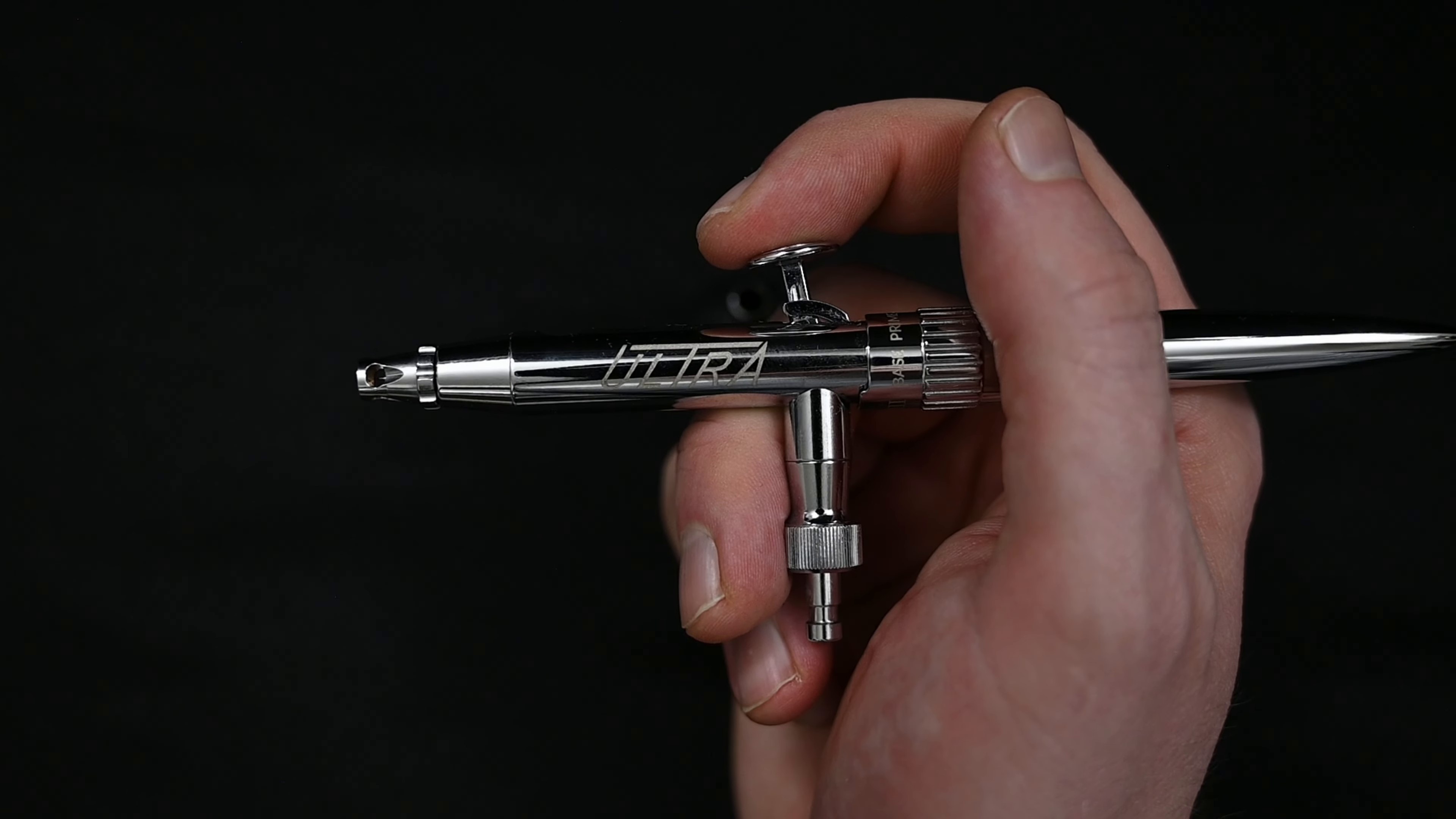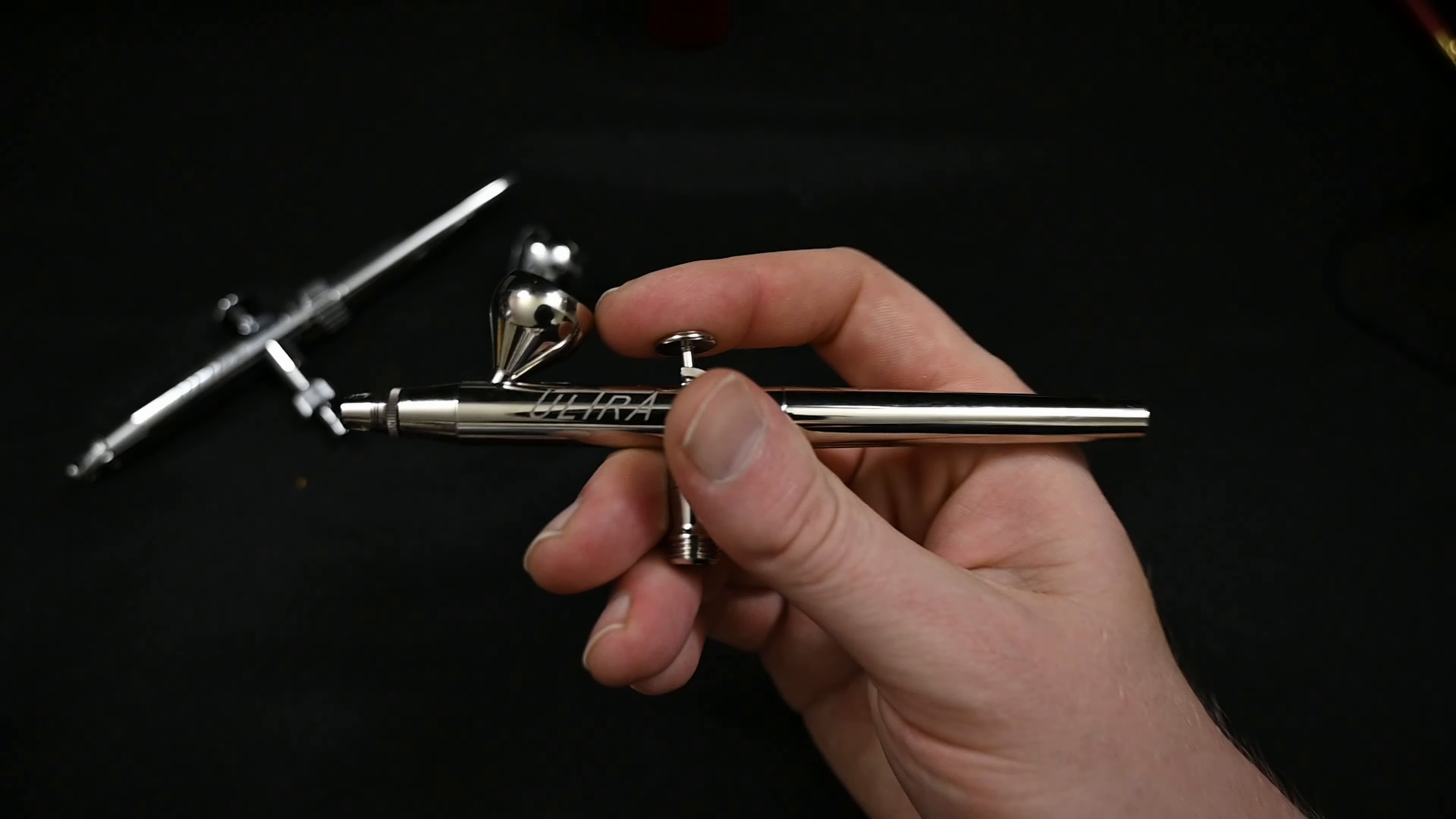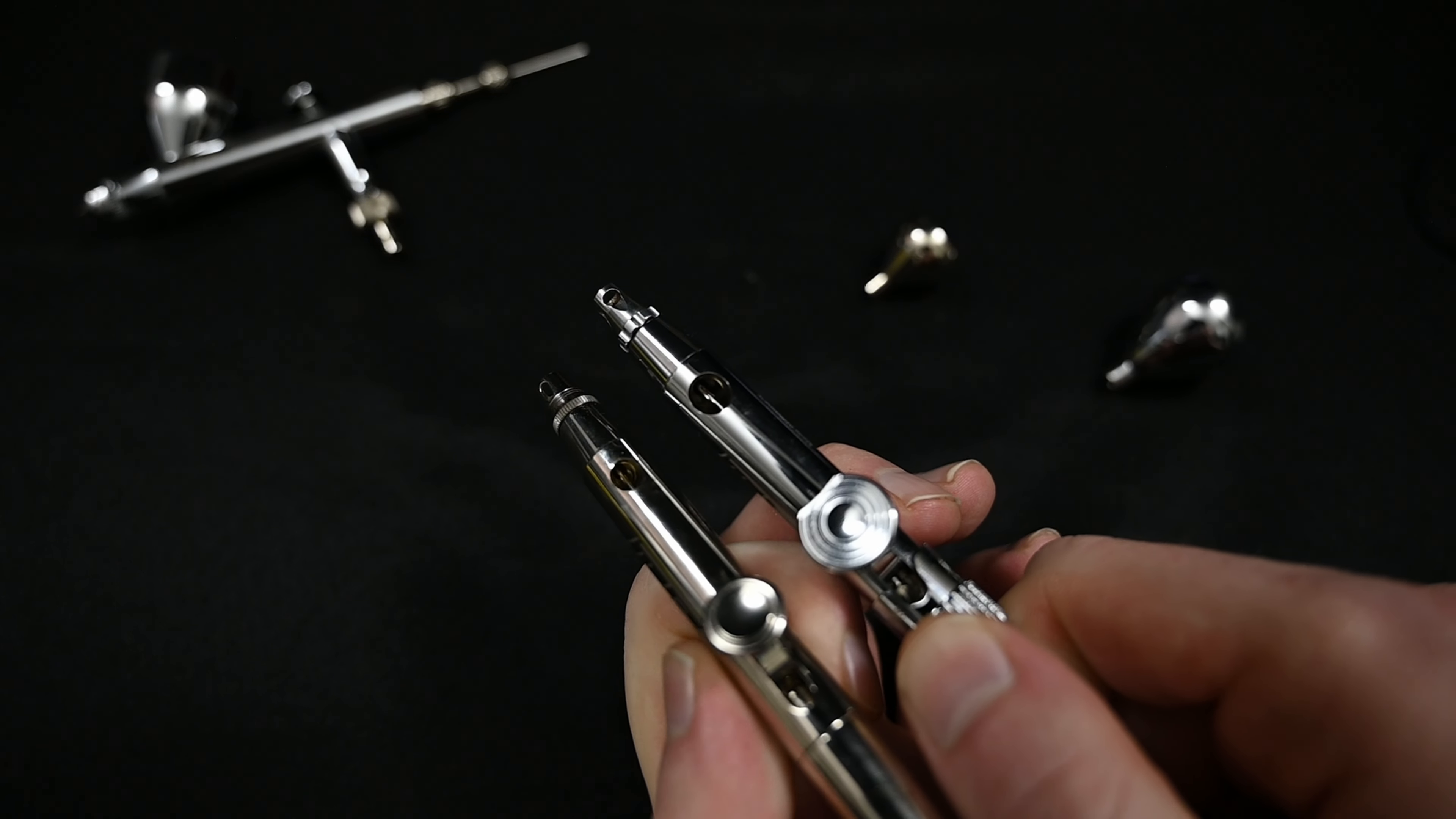The only real negative thing that I found about this airbrush is that when the cup is on, it's just too large and too close to the trigger. When I paint with this with the cup on, it just feels way too cramped. The older Ultra model didn't have this problem. You can see here that there's a lot more space between the trigger and the cup. And unfortunately, you can't just swap out the cups because the opening, where it's compression fit, is different between the two.